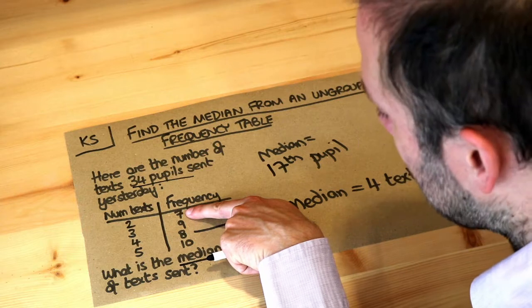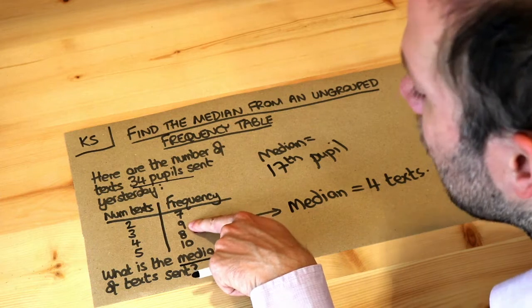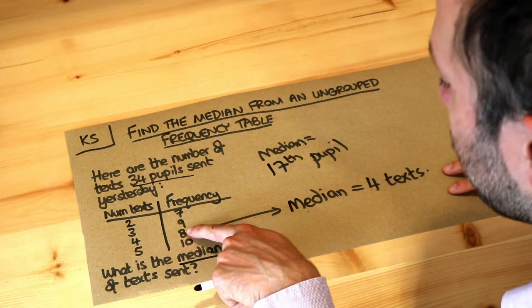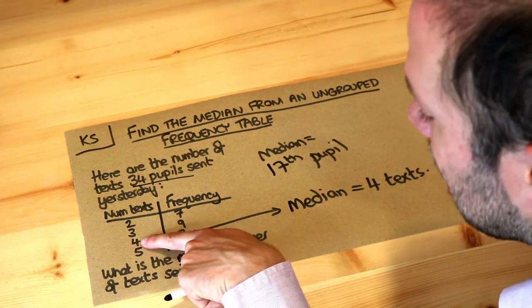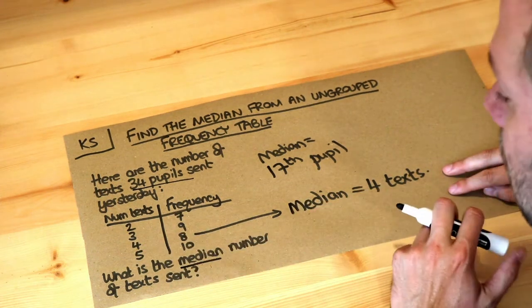It's not in the first seven things, and it's not within the next nine things either because that gets us up to the 16th people. But the 17th people will then be the first student in this next group, which is the students who sent four texts. So the median will be four texts.